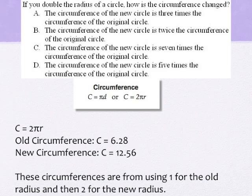By using some basic numbers, we can now compare an old circumference to a new circumference. The old circumference used a radius of 1, and the new circumference used twice that for a radius of 2.